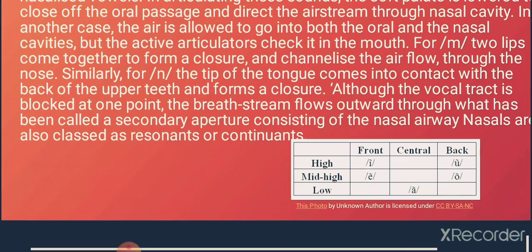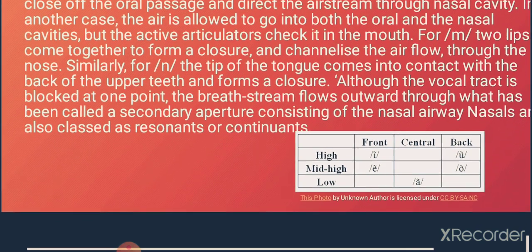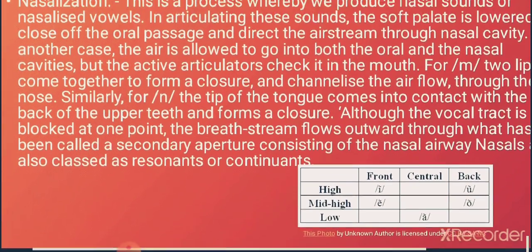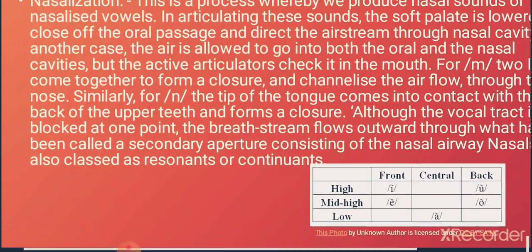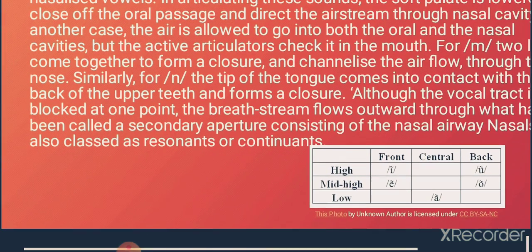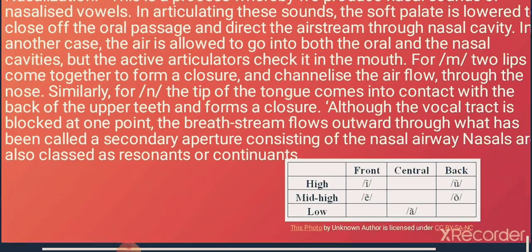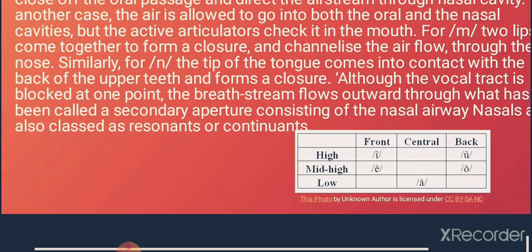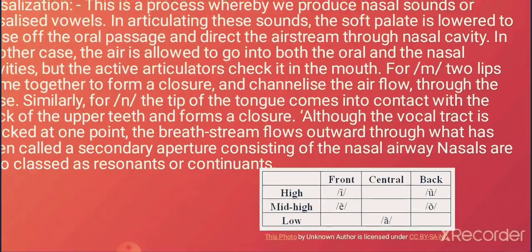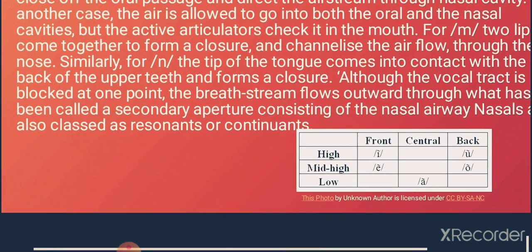For 'm', the two lips come together to form a closure and channel the airflow through the nose. Similarly, for 'n', the tip of the tongue comes into contact with the back of the upper teeth and forms a closure. Although the vocal tract is blocked at one point, the breath stream flows outward through a secondary aperture — the nasal airway. Nasals are also classed as resonants or continuants.